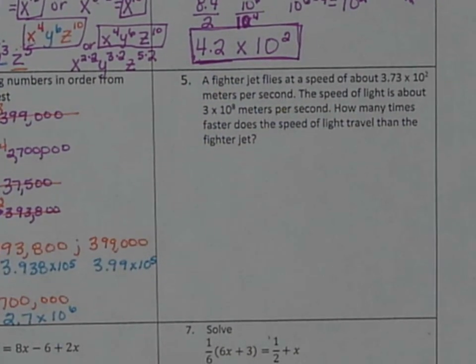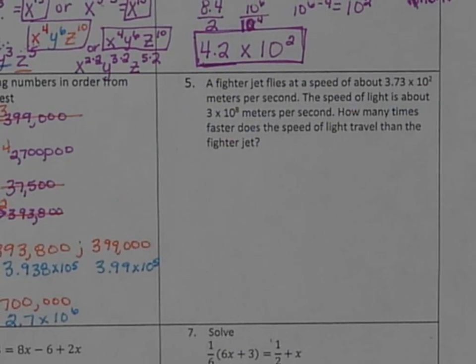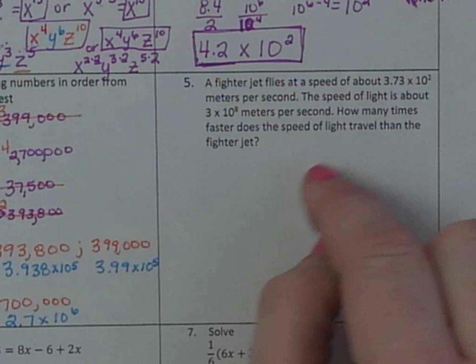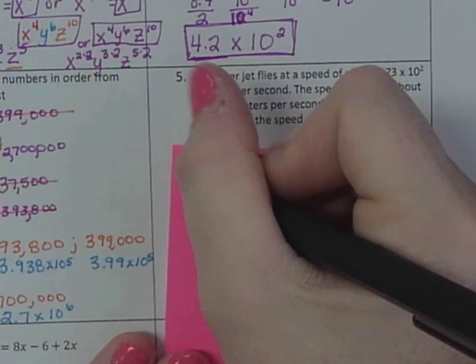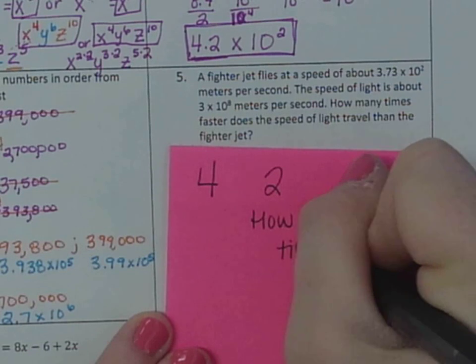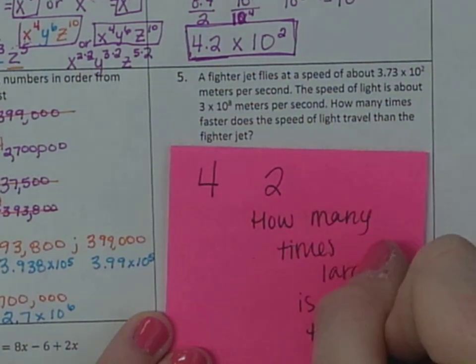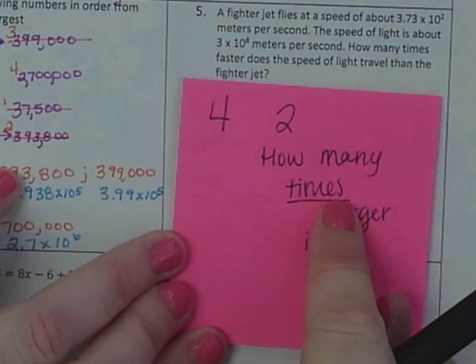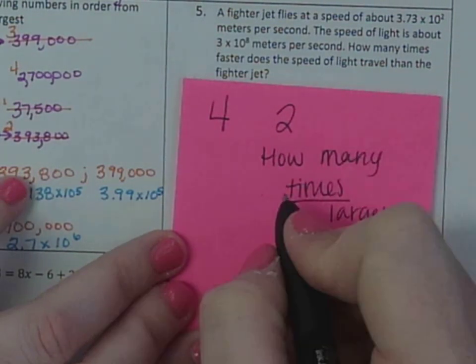This next one, a fighter jet flies at a speed of about 3.73 times 10 squared meters per second. The speed of light is about 3 times 10 to the 8th meters per second. How many times faster does the speed of light travel than the fighter jet? So remember, the main thing that you have to figure out here is, should you multiply those two numbers together or should you be dividing? Well, if I had two numbers and I said 4 and 2, and I said how many times larger is 4 than 2, you would divide.